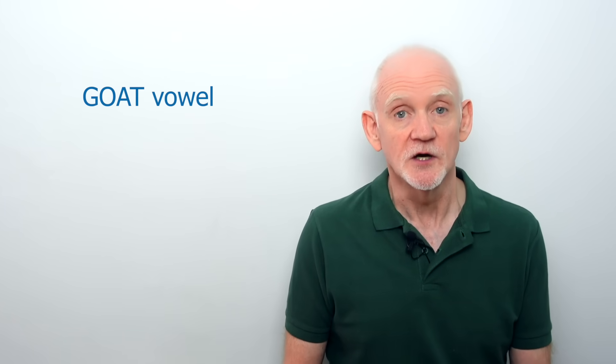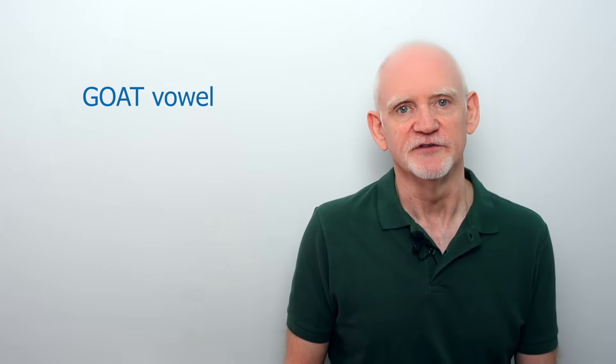The diphthong we're discussing, the one in words like go and know and show, is known to phonetics people as the goat vowel. And when it isn't followed immediately by another vowel, Australians pronounce it differently. Specifically, they change the glide part.